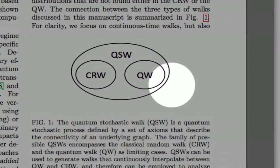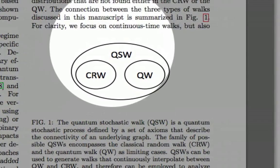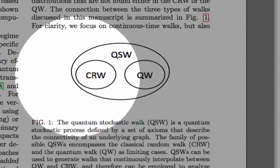The classical random walk behaves as a classical stochastic process. The quantum walk evolves following Schrodinger's equation. We were interested in a more general class that we call the quantum stochastic walk.